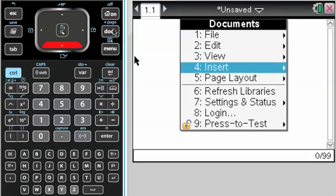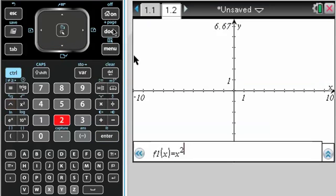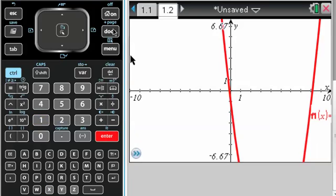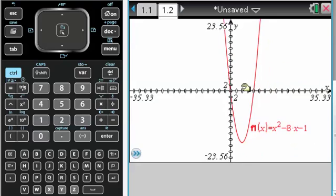So the first thing I need is to insert a graph, and then I'll graph x squared minus 8x minus 1. Let's see. Alright, so that's like that.